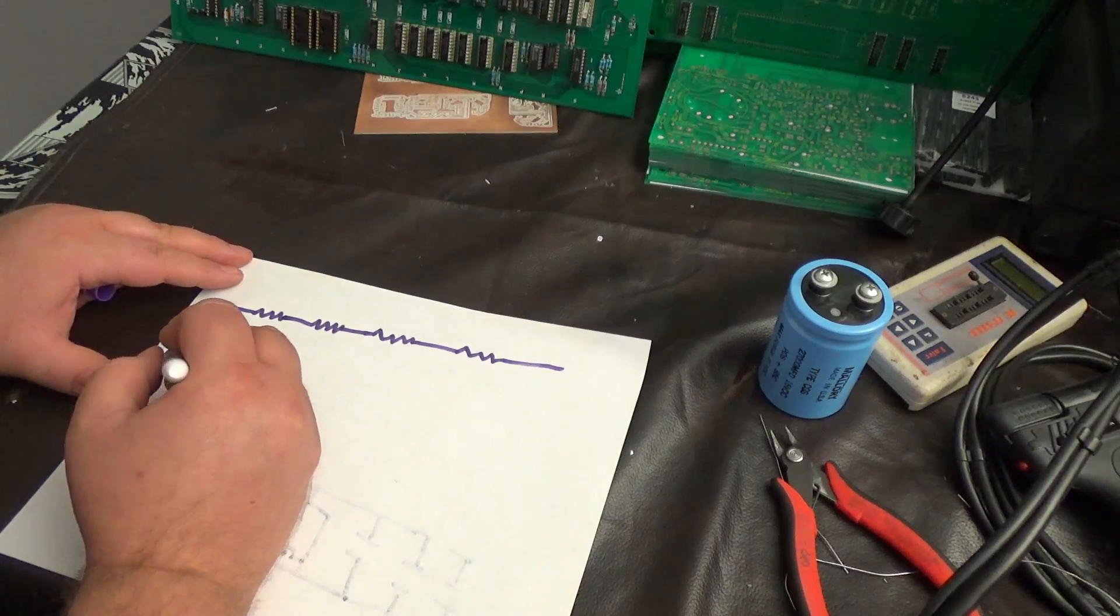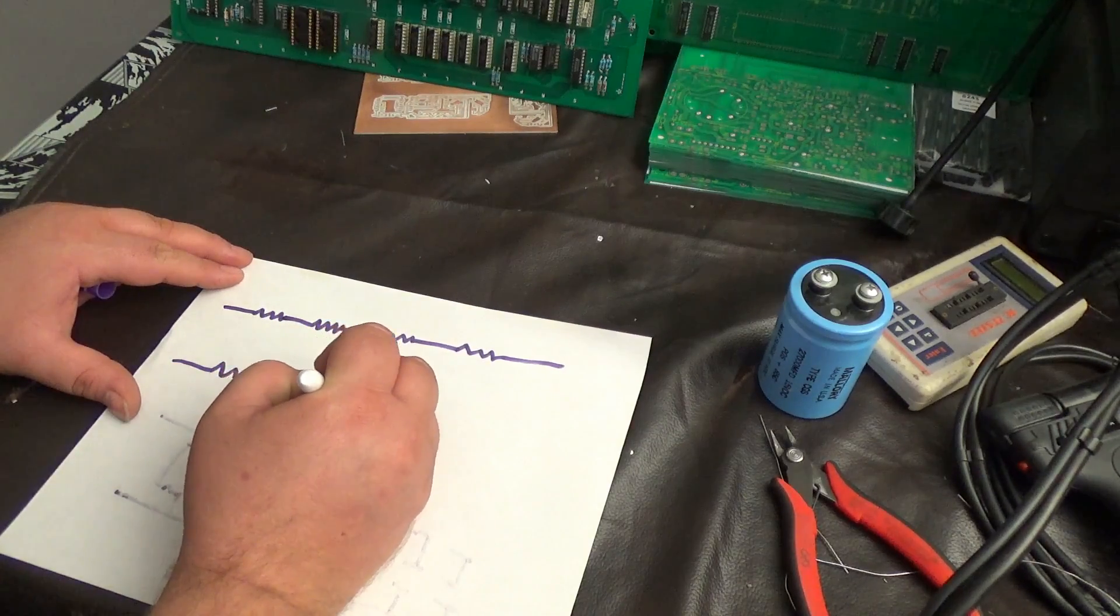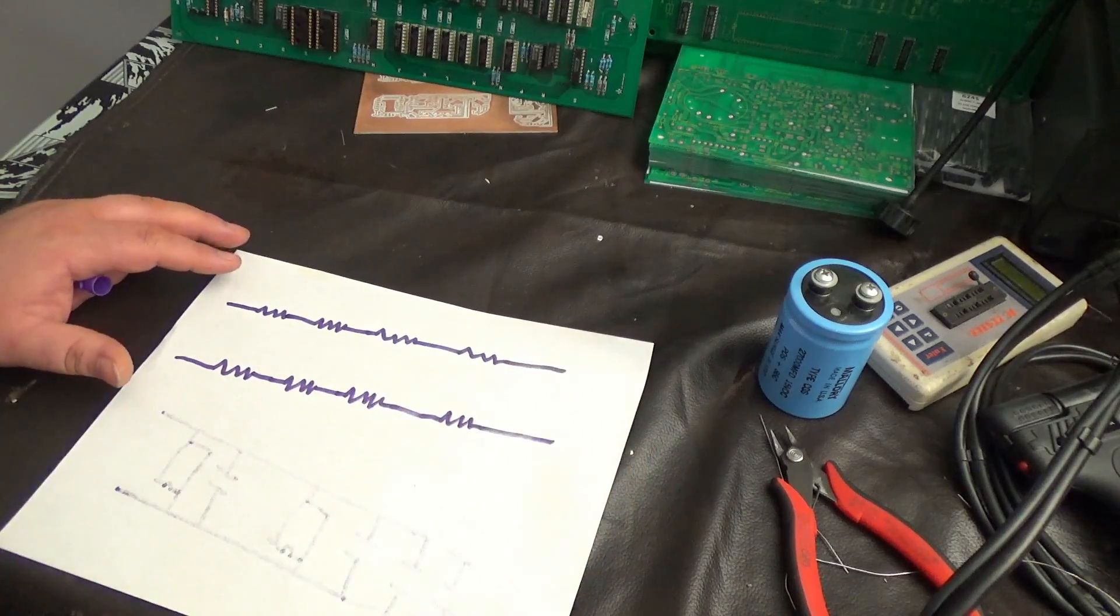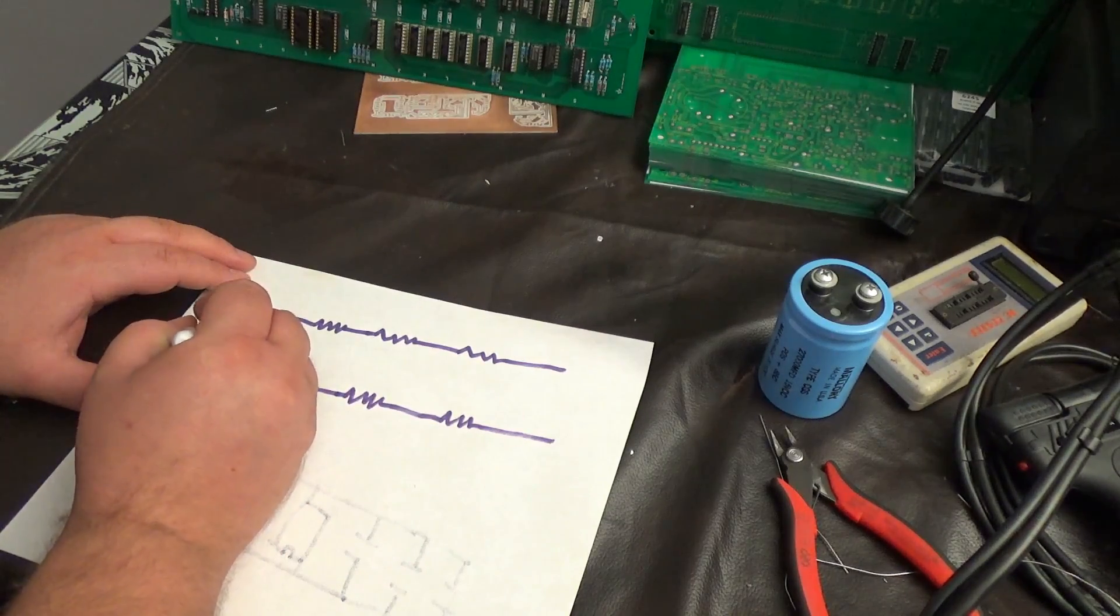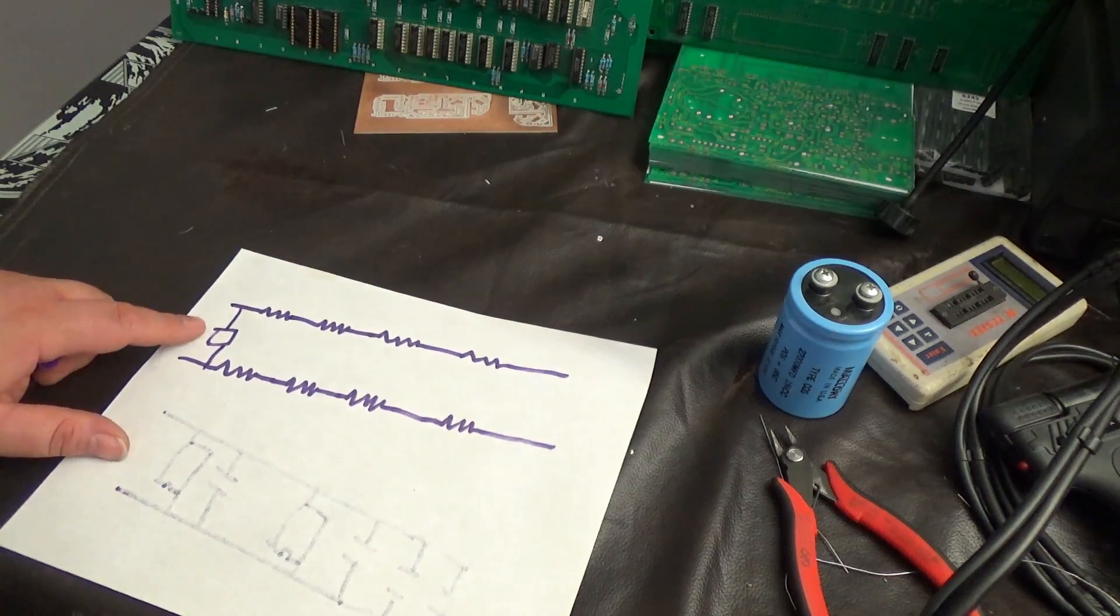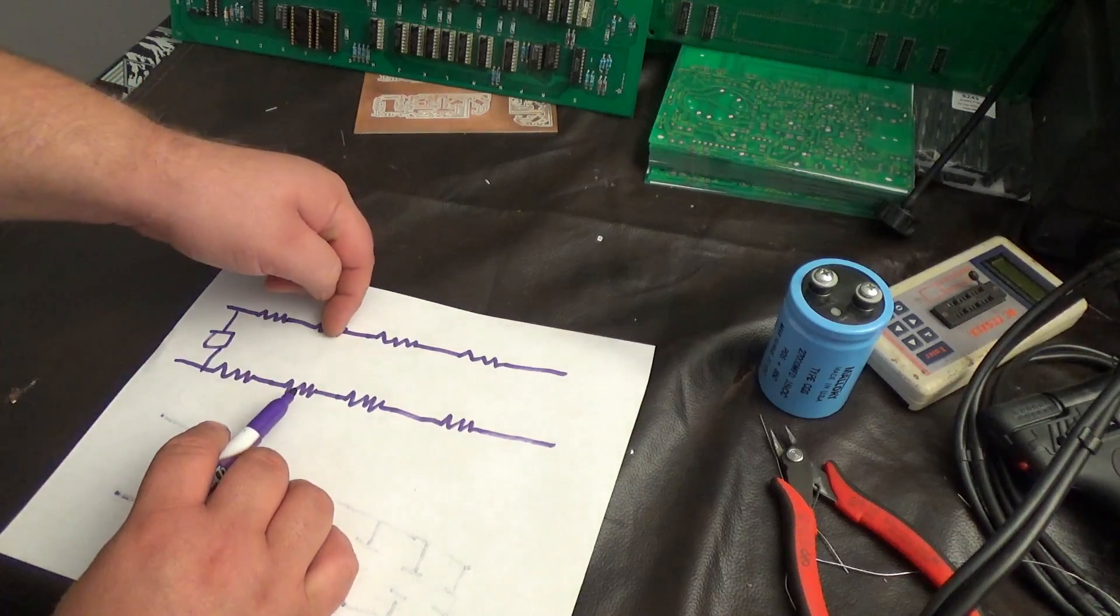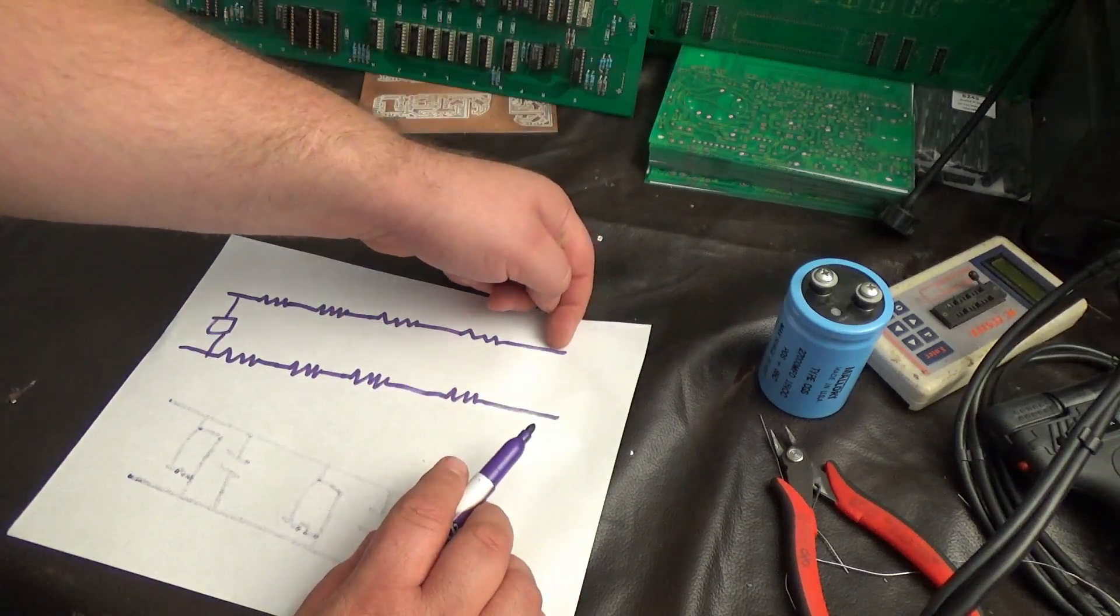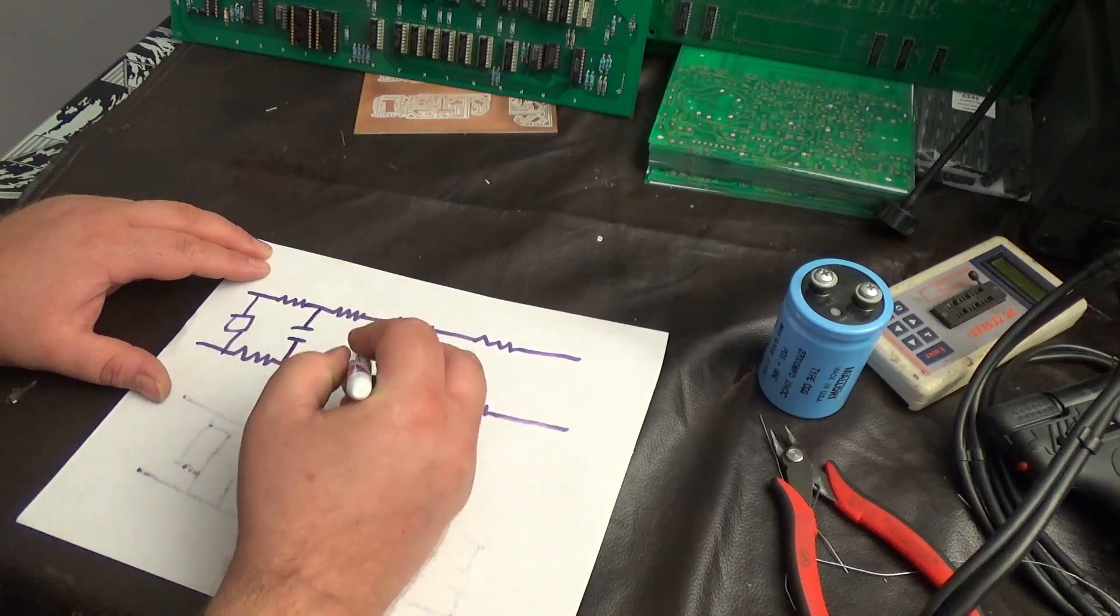So, what you should imagine that as, is imagine your power rails is a big, long resistor. So let's say that's your plus 5. Let's say this is your negative 5. Now, in between there, there might be chips. Let's just make a square for a chip. There could be a chip here.